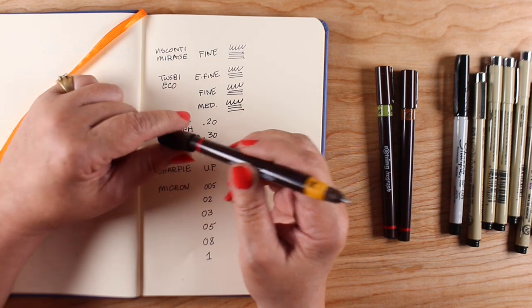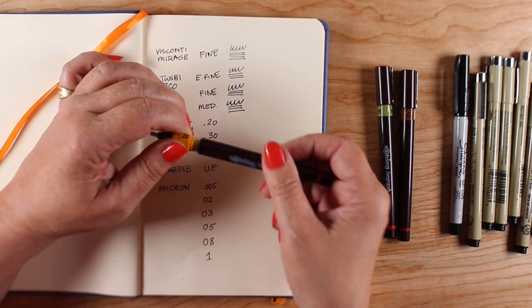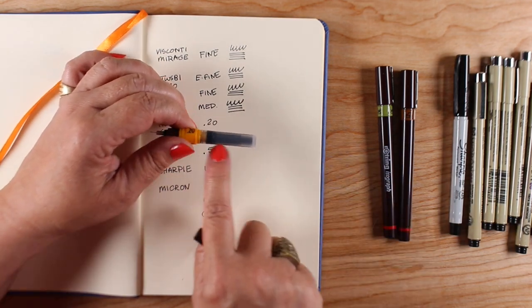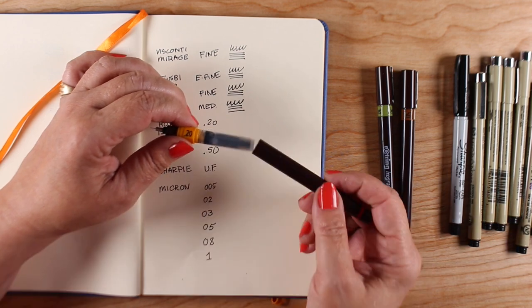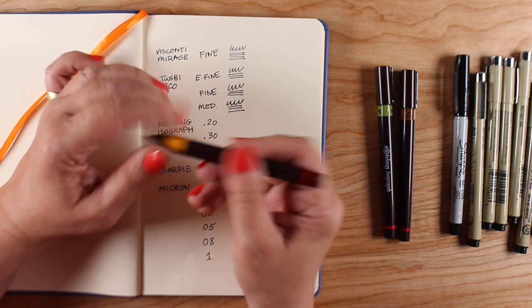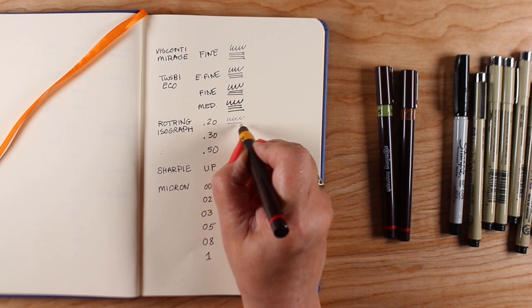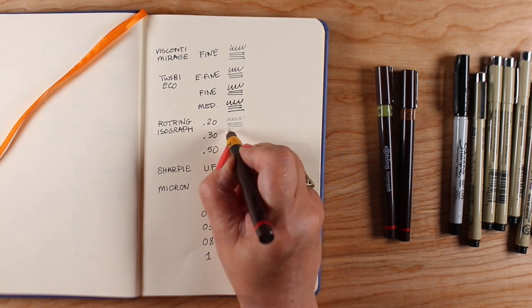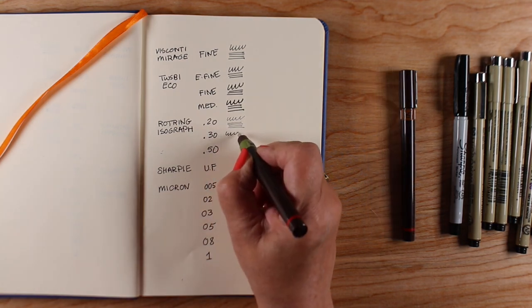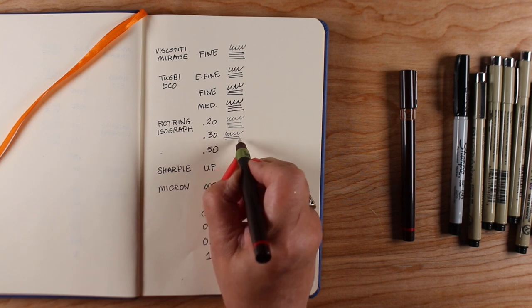The Rotring Isograph, these pens are okay. I had a different brand when I was in college. I had the Kohenors. I think they were higher quality than these but these are decent. They're an expensive set but they're not bad pens. The caps don't stay on really well but you can replace the nibs and you can replace the ink inside them.